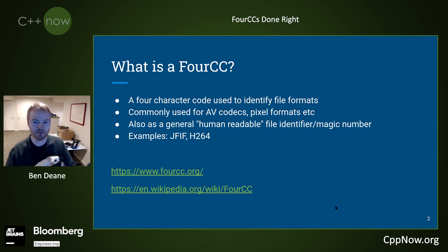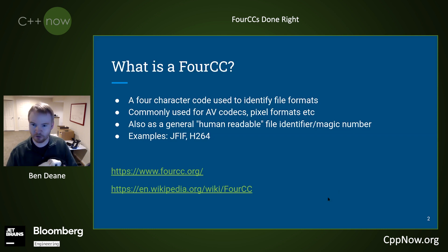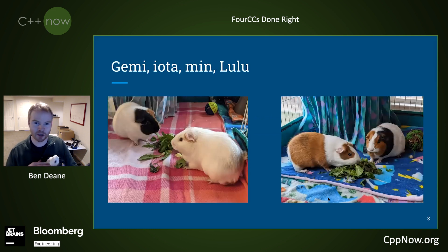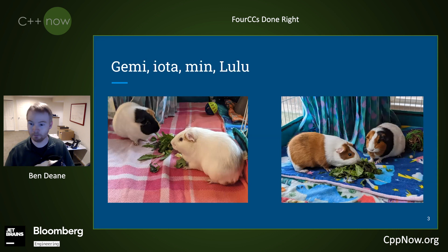They're also useful if you have a small set of things — not just AV codecs, but a small set of things like your product portfolio for your company to identify. I have four of my own. I call them Jemmy, Iota, Minalulu. This is Iota. Guess which ones I named?